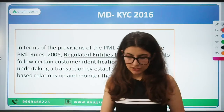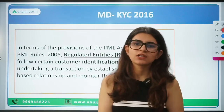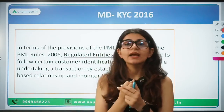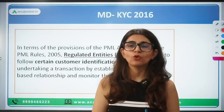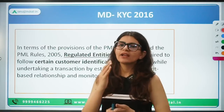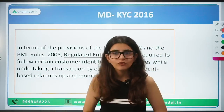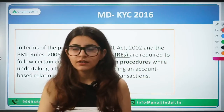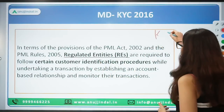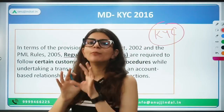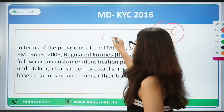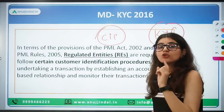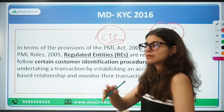Now how can banks or other financial institutions — NBFCs, fintech firms — minimize or work towards anti-money laundering efforts? First of all, by getting a customer identification process. Every bank has a customer identification process. Any customer opening an account, taking a loan, or availing any service of a bank is subject to KYC norms — Know Your Customer — meaning the bank should be able to know and identify their customer. That's why CIP, Customer Identification Process, is required. Every regulated entity, including NBFCs and other firms, has to adopt a customer identification process.